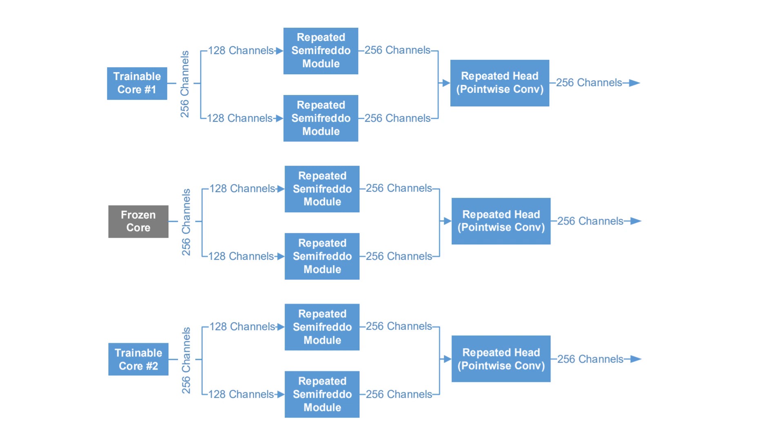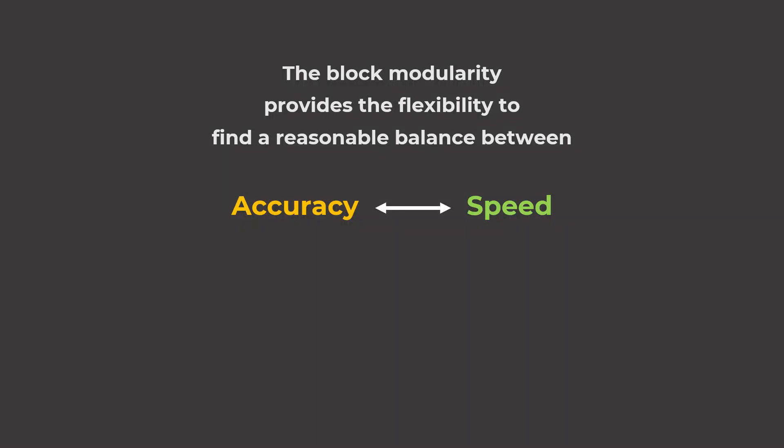SemifredoNets can implement deeper and larger neural network architectures by reusing the last blocks repeatedly in a single inference pass. This block modularity provides the flexibility to find a reasonable balance between accuracy and speed without requiring any hardware change.